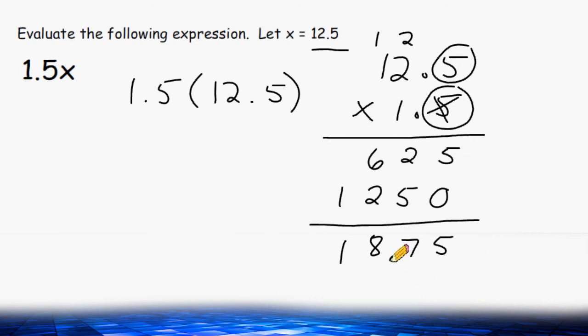So the only place our decimal can go is in this location. So the product of 1.5 and 12.5 is 18.75 or 18 and 75 hundredths.